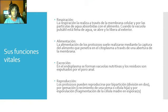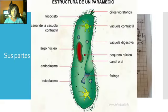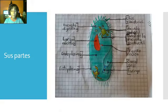Ahora miremos las partes en el dibujo que yo realicé. Aquí podemos ver el dibujo que yo realicé. Me basé en esta imagen — la imagen que están viendo aquí en pantalla — para dibujar el paramecio.